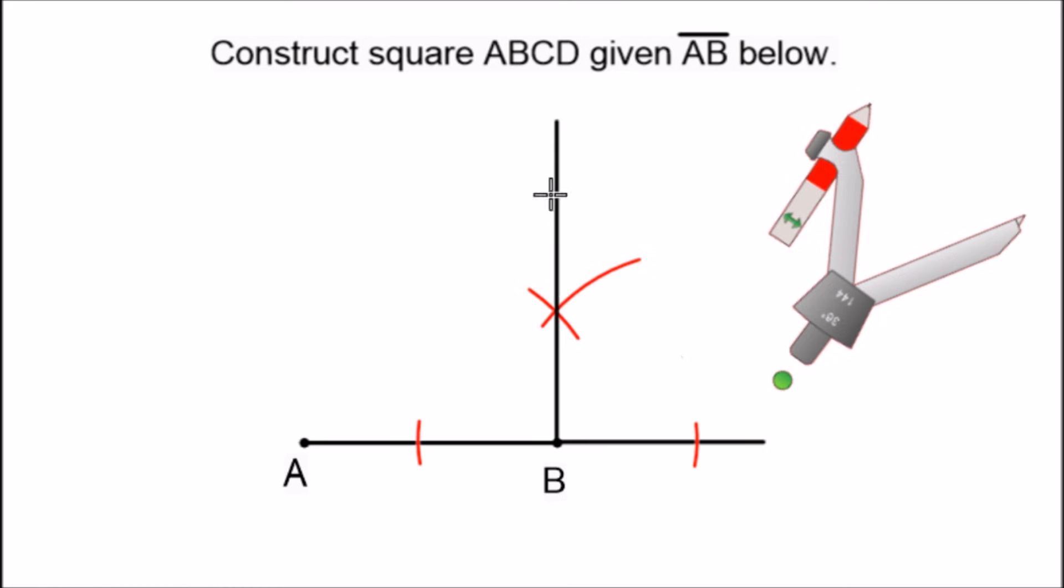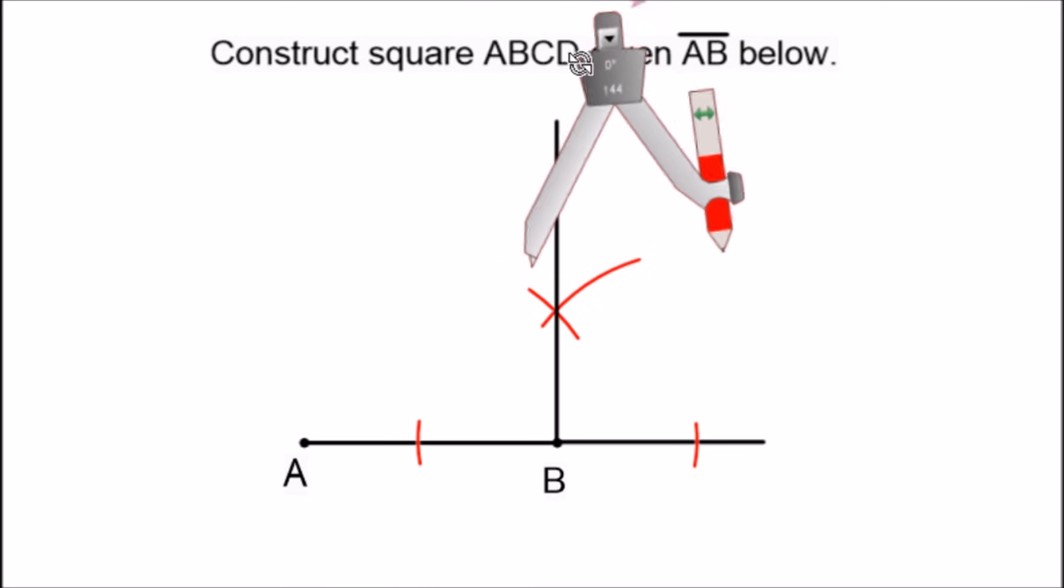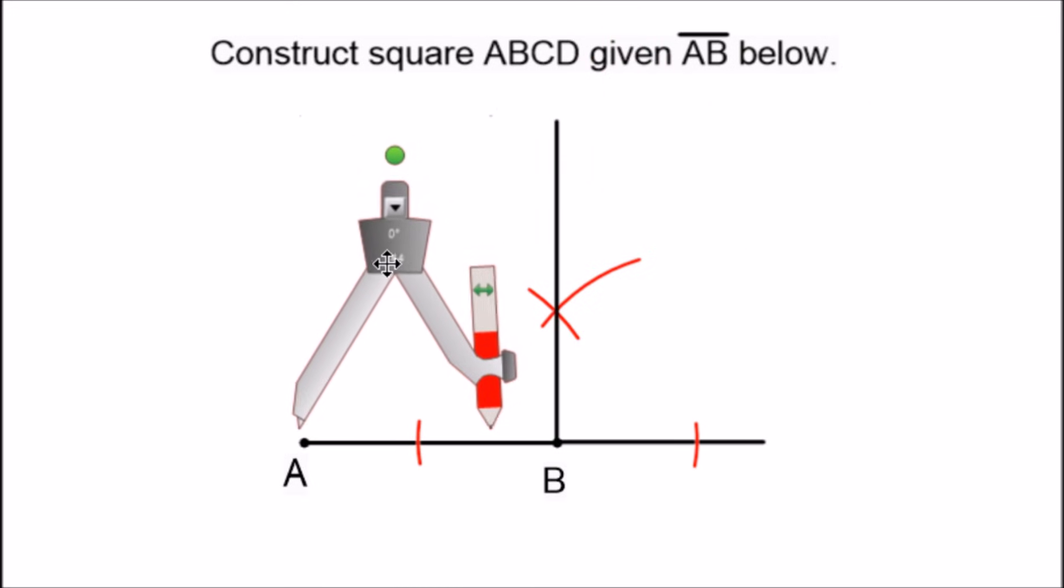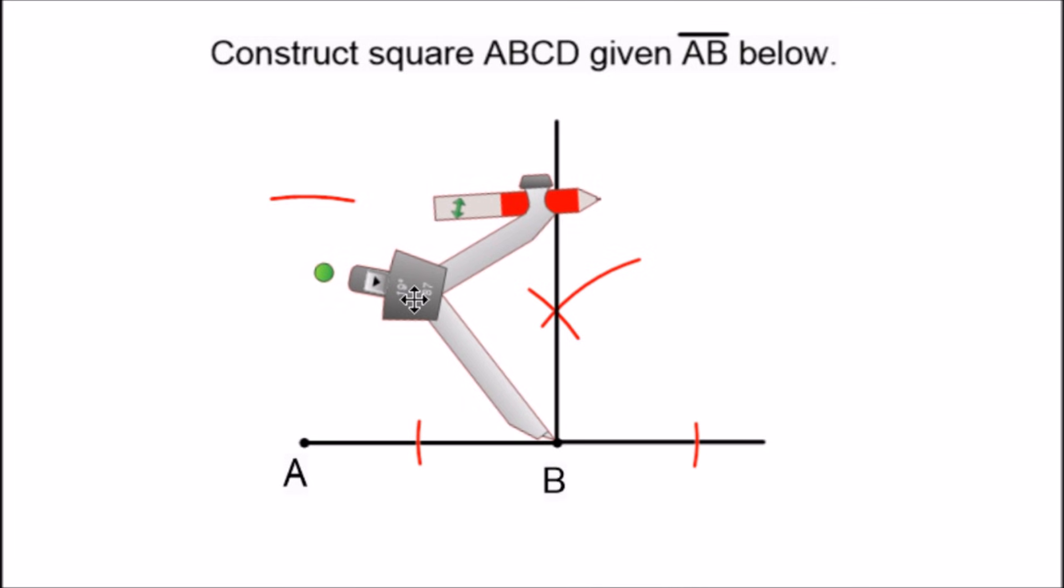Now we could set this to any length that's obviously greater than line segment AB because now we're going to set the compass to the length of line segment AB so we can finish this construction. So we extend it to match exactly the length of AB and now we're going to swing the arc directly over point A and repeat that over point B.